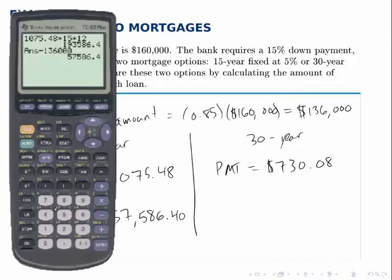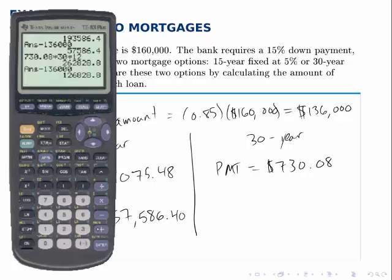For the 30-year mortgage, we can make the same calculation: take the monthly payment amount times the number of years times the number of months per year. So you make the payment 360 times for a total of $262,828.80. Again, that's still paying off that $136,000 loan, so the interest amount is $126,828.80.